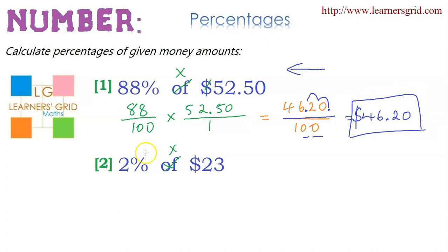Let's move on to number two. Number two is 2% of $23. So 2% is 2 over 100, multiplied by 23. Put it over 1, so now we have two fractions that we can multiply. Multiply the denominator by the denominator to make 100, and in this case, numerator times numerator is quite simple, 46.